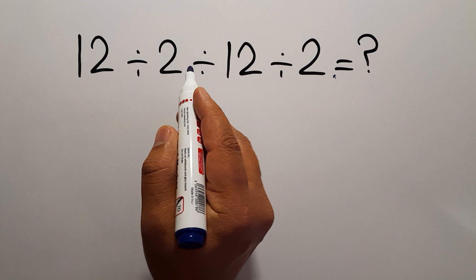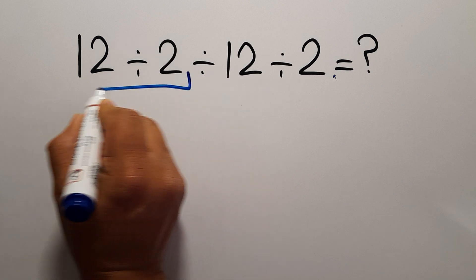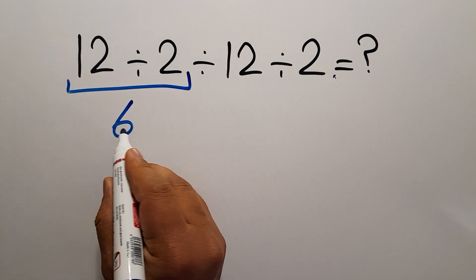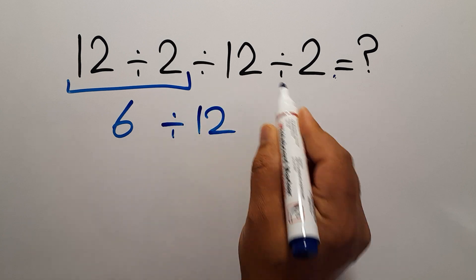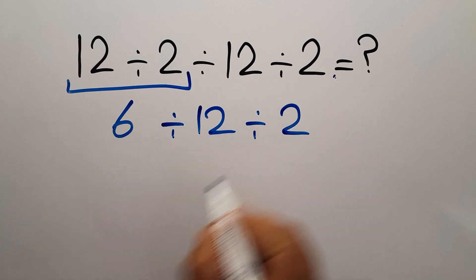12 divided by 2 gives us 6. So we have 6 divided by 12 and divided by 2. Now we have to do this division.